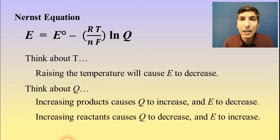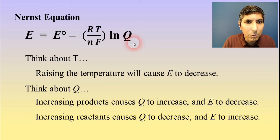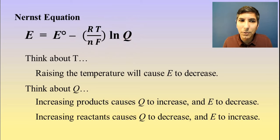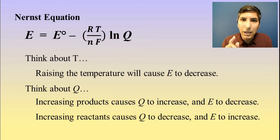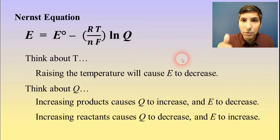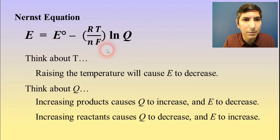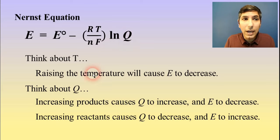Now let's think the other way. If you increase the reactants — which are in the denominator of Q — Q decreases, and that causes this entire term to decrease, so your voltage or cell potential goes up. Decreasing the products also causes the cell potential to increase. So: increasing reactants or decreasing products causes voltage to go up. You don't have to memorize how to plug into this equation, but you should know how manipulating temperature, reactants, and products will change the value of E.